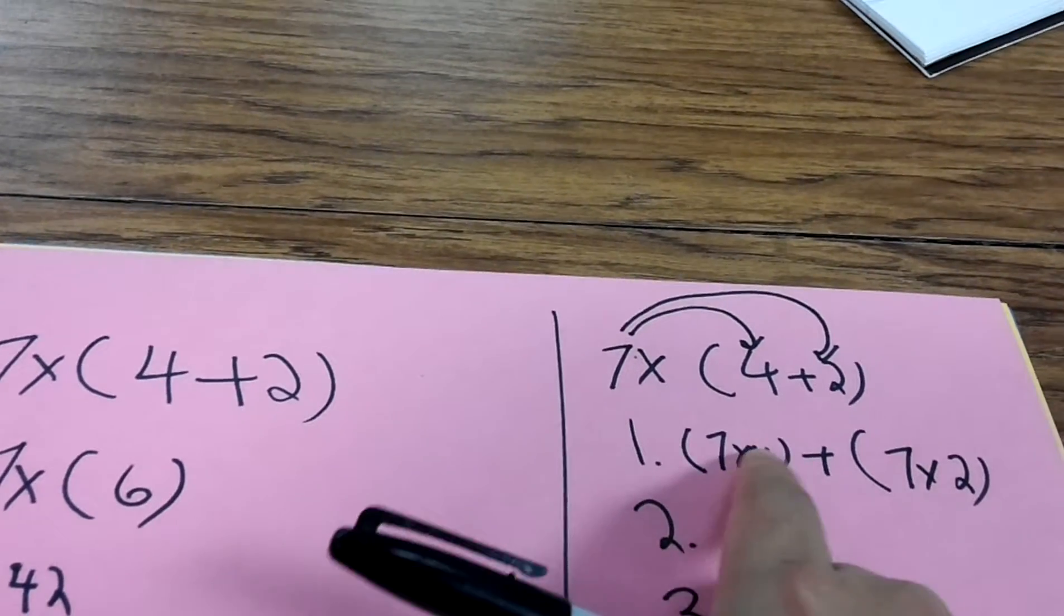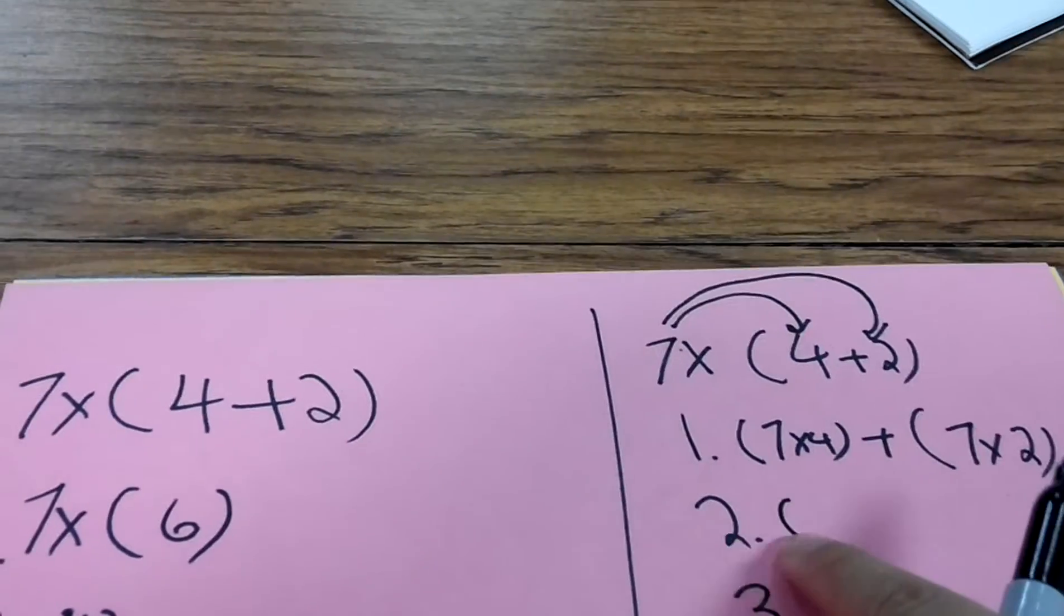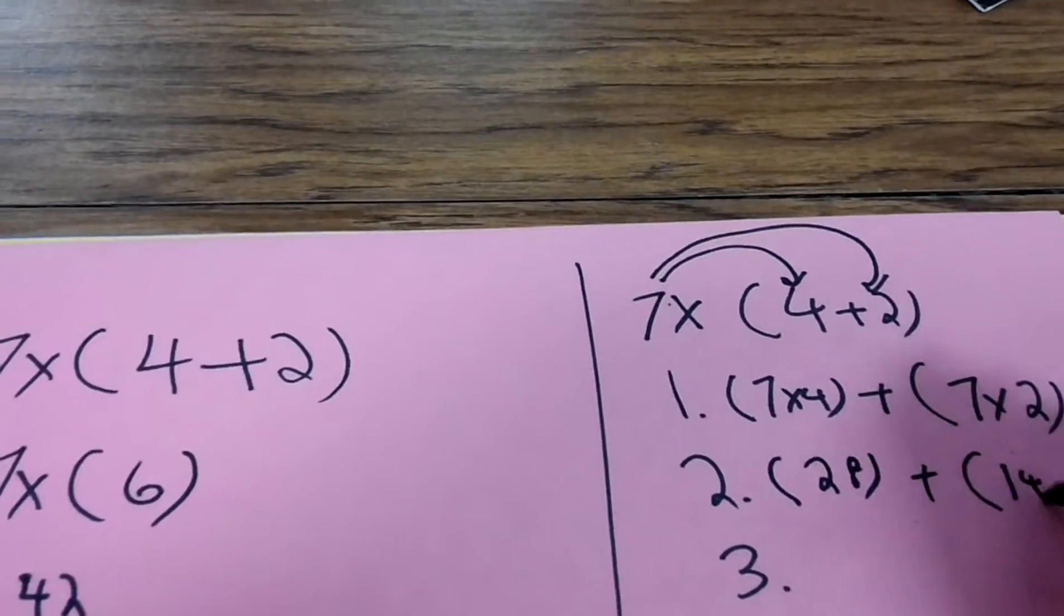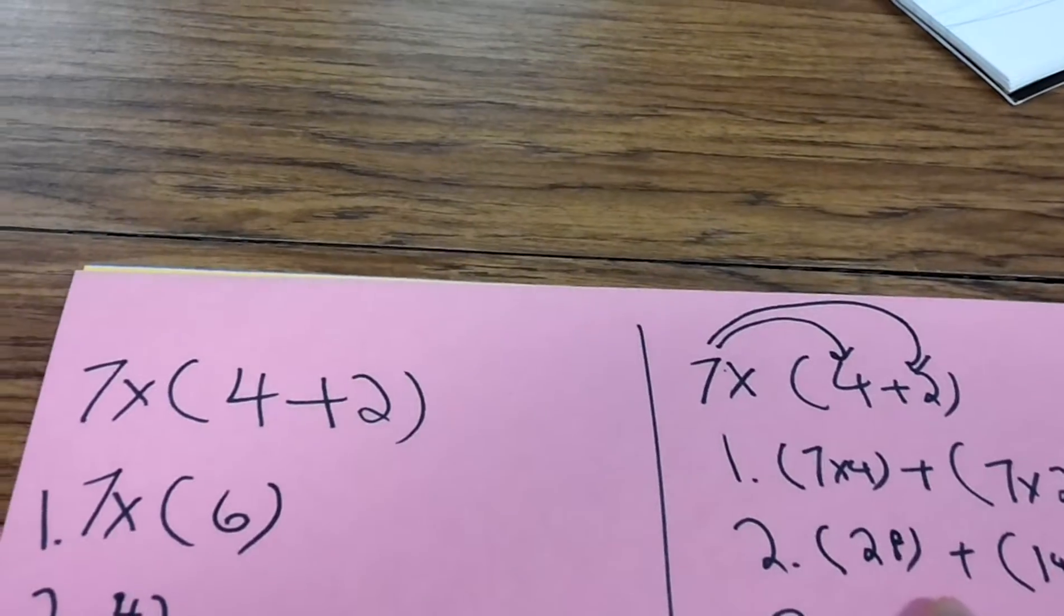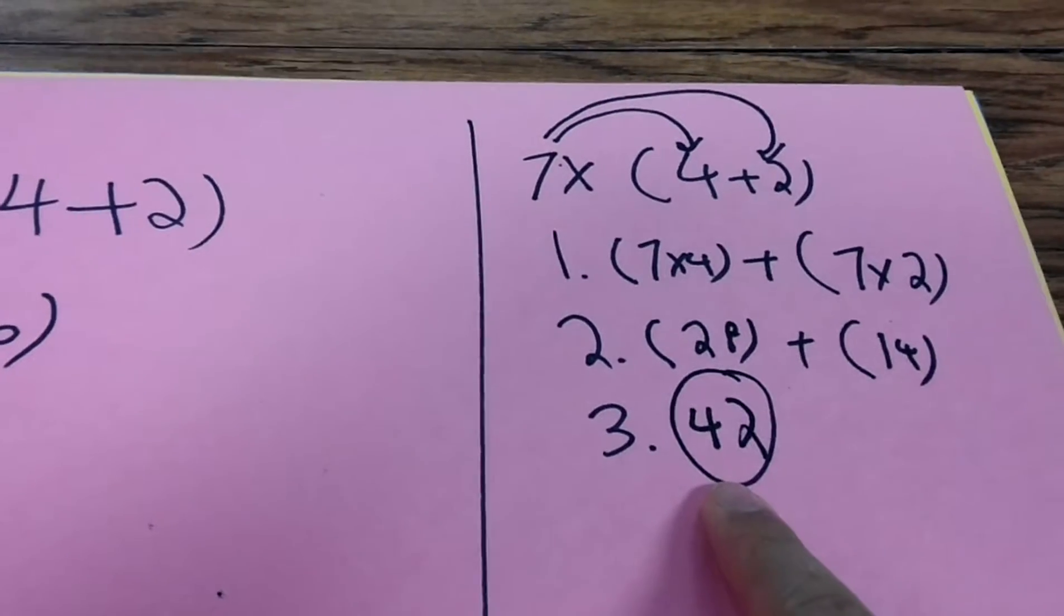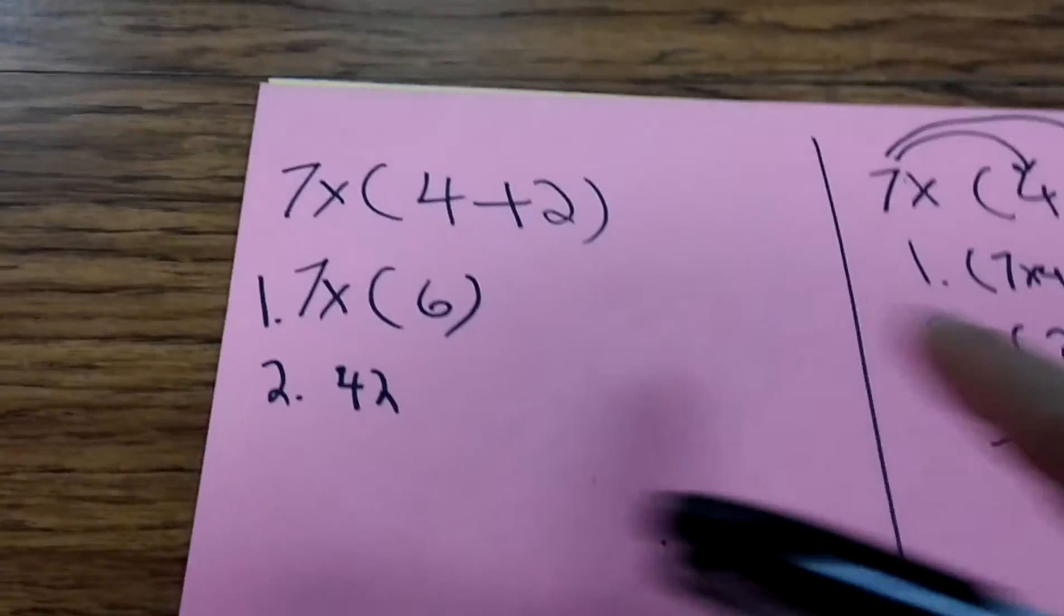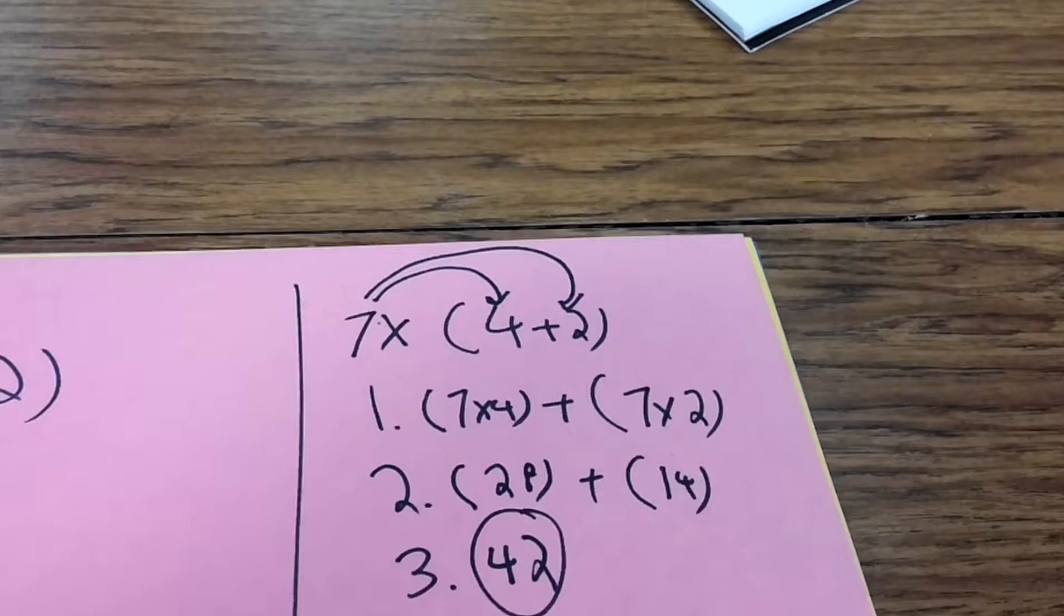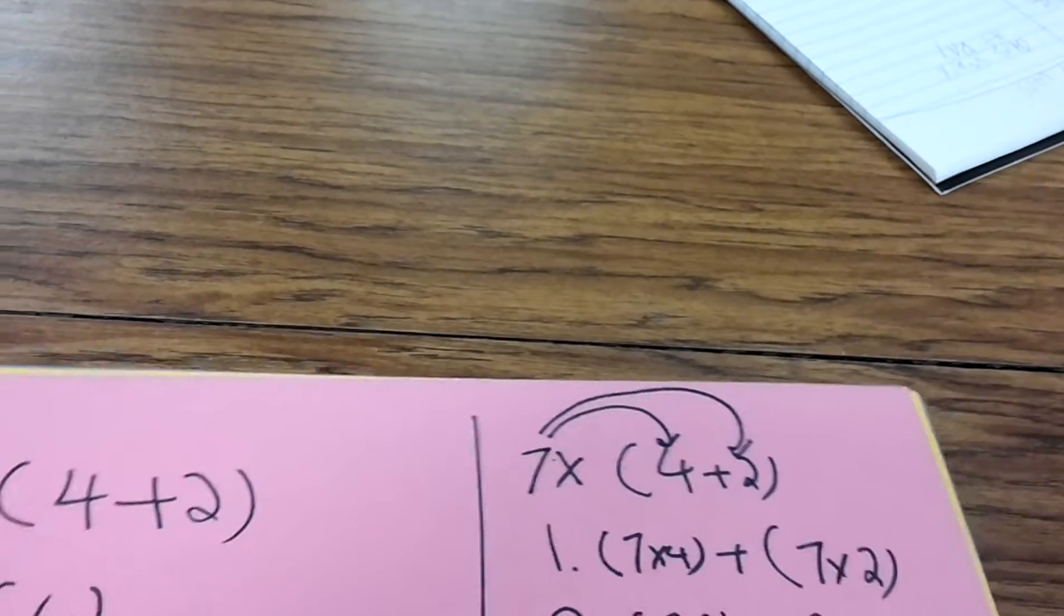Seven times four, plus 7×2. The next step is I'm going to solve it. 7×4 is 28, plus 7×2 is 14. Now the third step, I'm just going to add 28+14. 28+14 is 42. Do you see how I use the distributive property to do this? 7×4, plus 7×2. I got 42 here, and the other way, I also got 42. There are two different ways to get the same answer, but if I ask you to use the distributive property of multiplication, this is what I mean. You take that seven, you distribute it to both numbers. Let's look at another example.